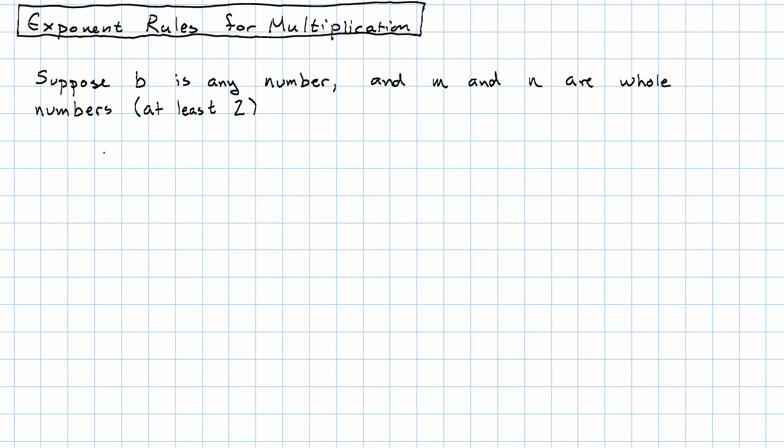If we have the number b to the nth power, and we multiply it by the number b to the nth power, what's going to happen?